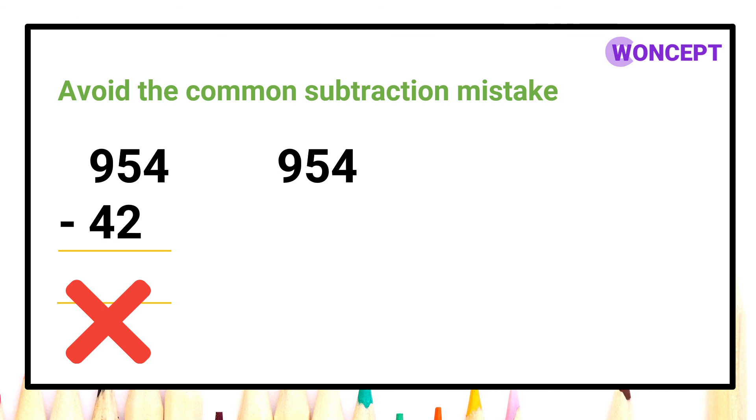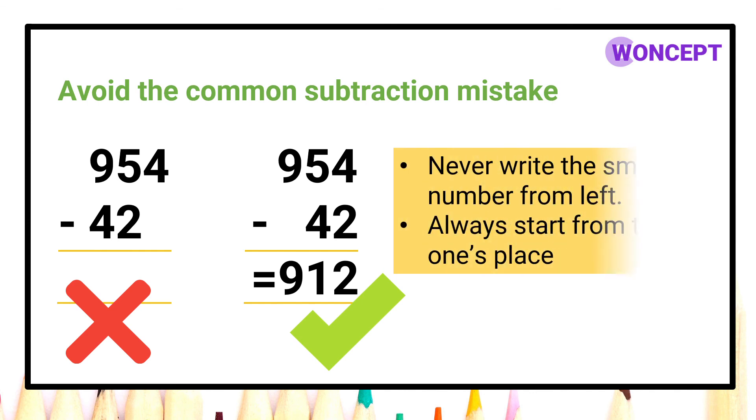Yes, 954 minus 42 should be written like this. This is the correct way of writing a sum as we should never write the smaller number from left. Always start from the ones place. We should write the number from ones place, then we move to tens place, then we move to hundreds place.